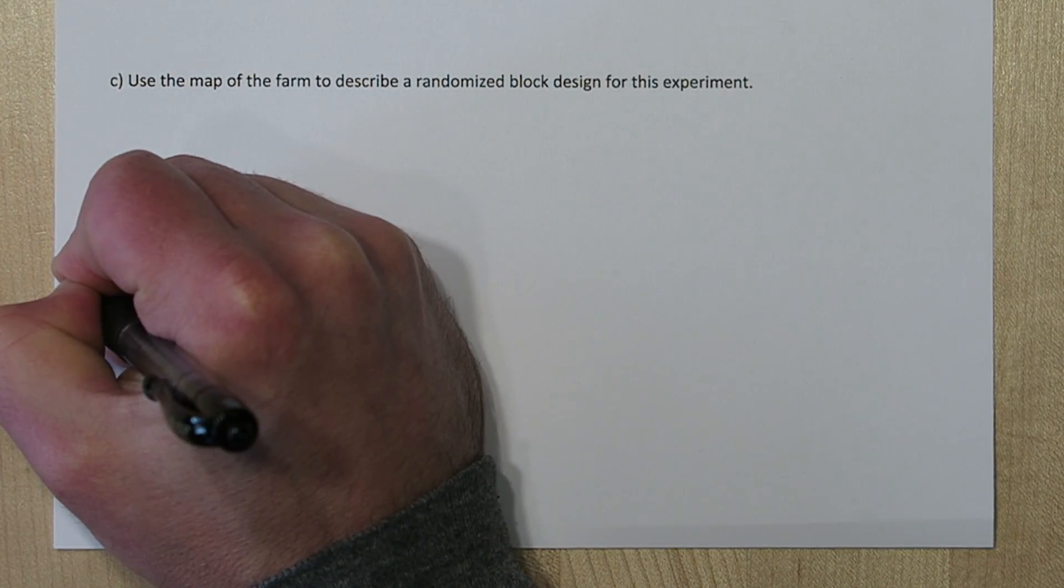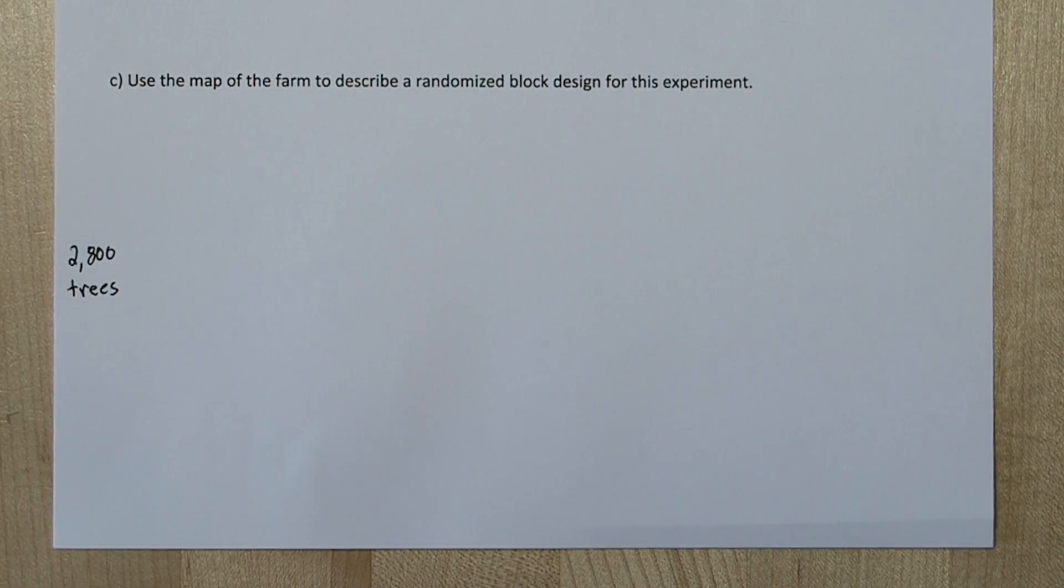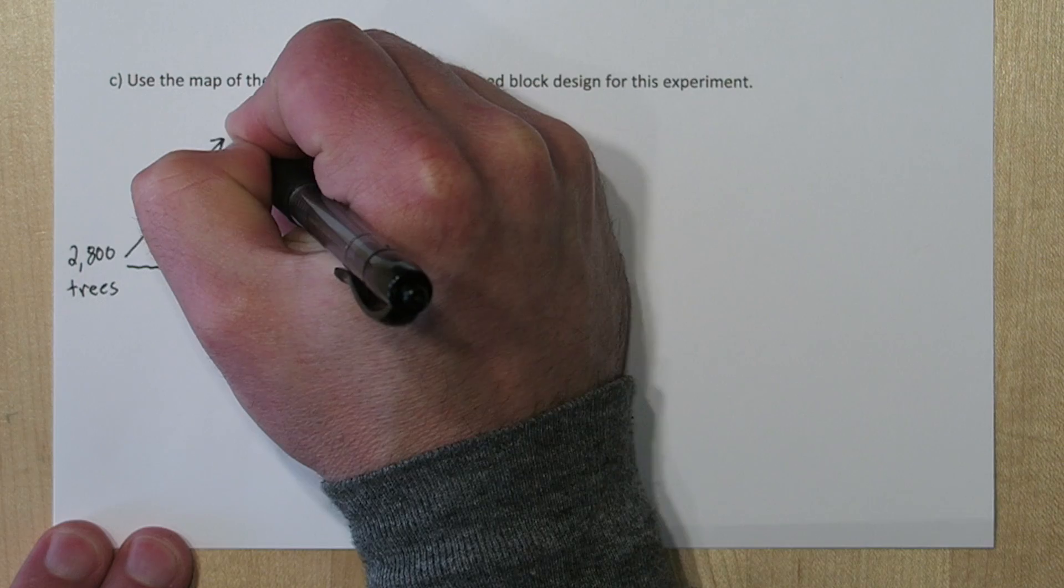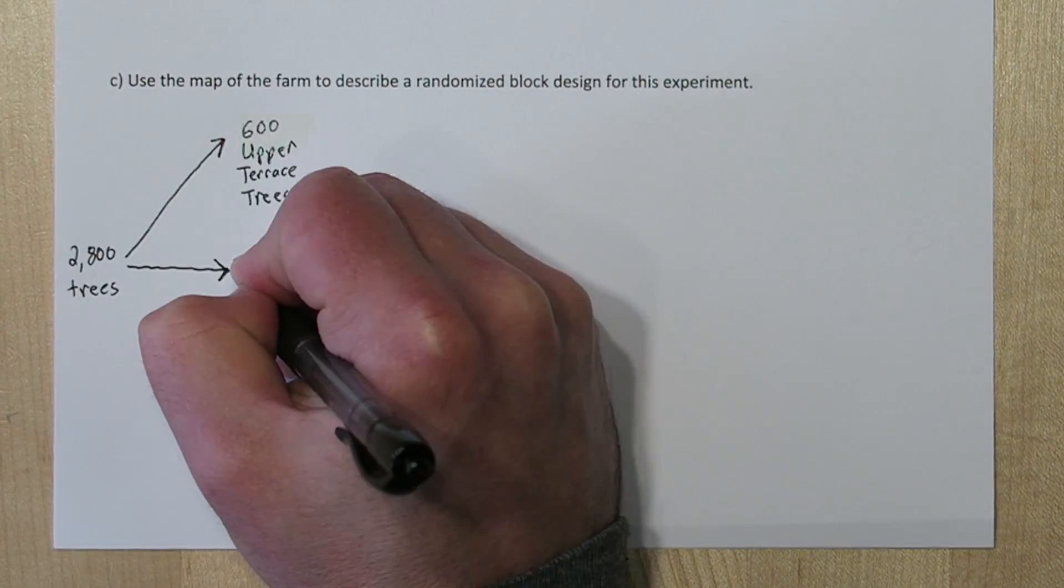So let's draw a diagram to describe our randomized block design. We're going to start with our 2800 trees, and we're going to divide them into our 600 upper terrace, 1000 middle terrace...